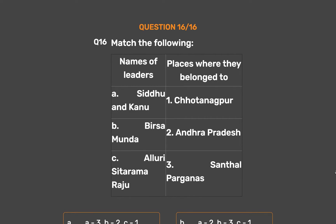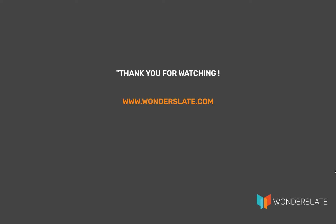The correct answer is Option D: A-3, B-1, C-2. Siddhu and Kanu lived in Santhal Parganas. Birsamunda lived in Chhotanagpur. Alluri Sita Rama Raju lived in Andhra Pradesh.